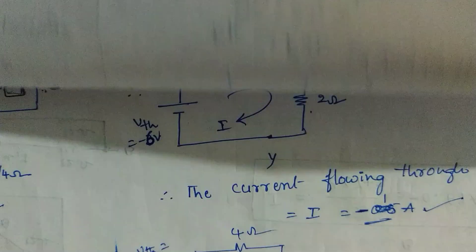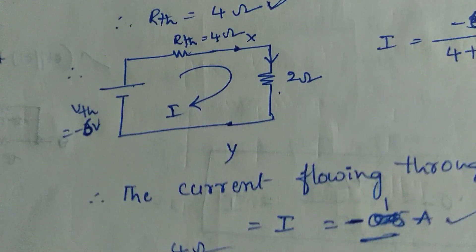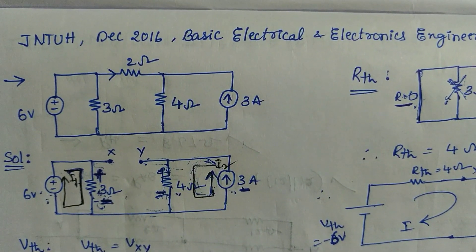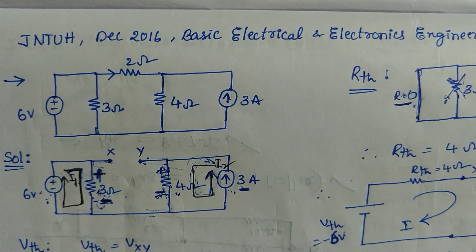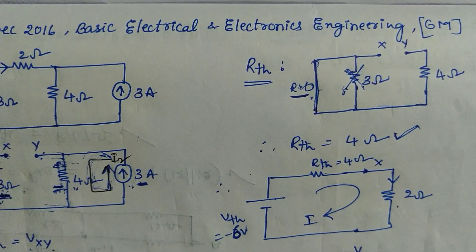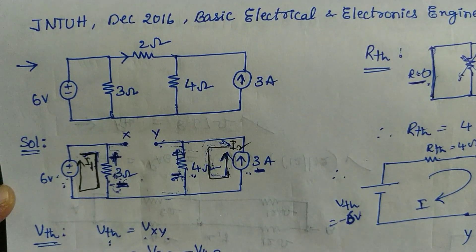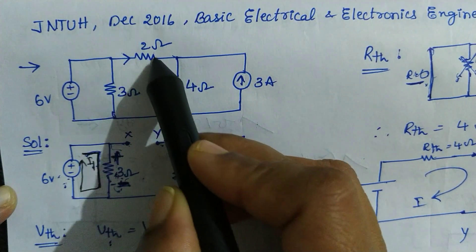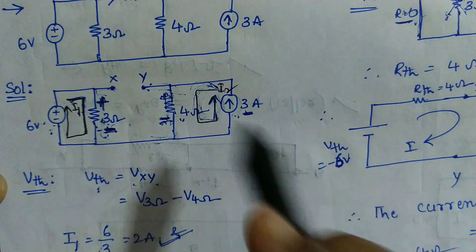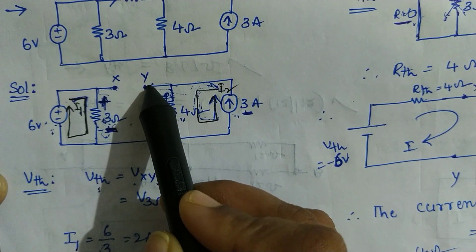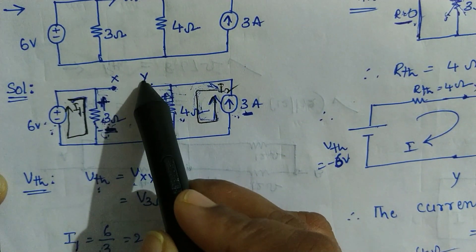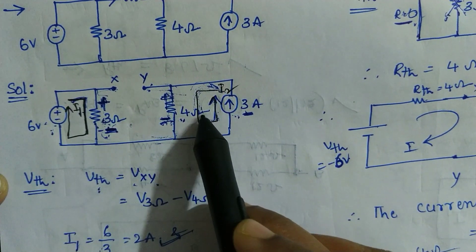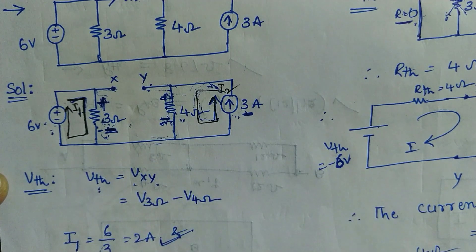Now let us go with the second problem. This is from JNTU Hyderabad, December 2016, Basic Electrical and Electronics Engineering for 6 marks. Here you need to find the current. The first step is to disconnect this element. If we do so, we will have the circuit with terminals named X and Y. We need to find the Thevenin equivalent circuit, starting with V Thevenin.